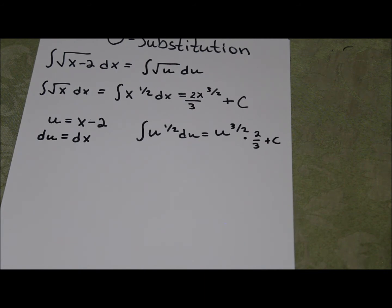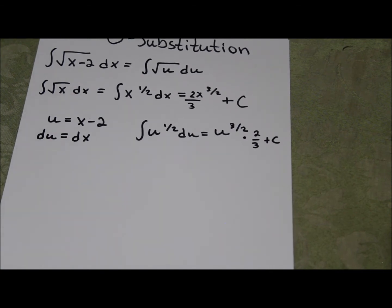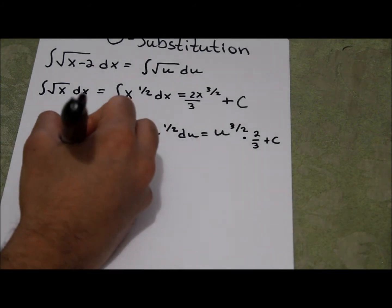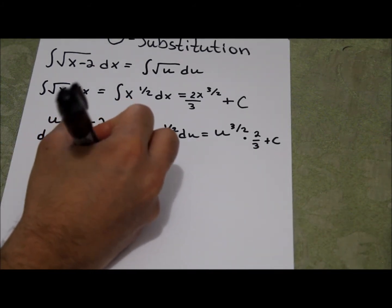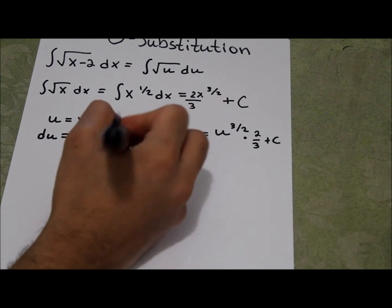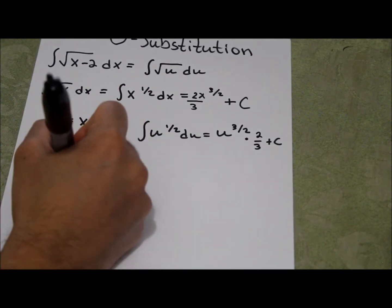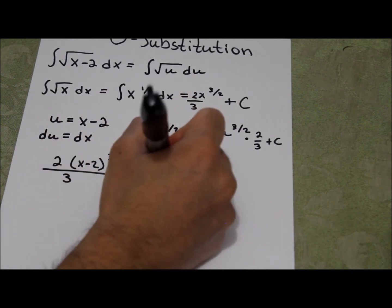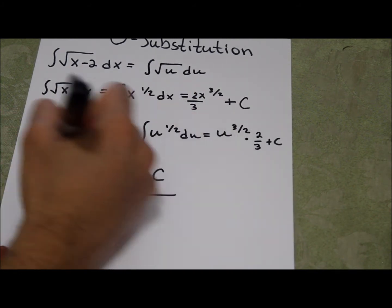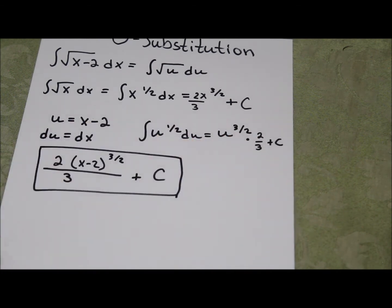But we're not done. Since we did use u-substitution and the original problem was in terms of x, we want to replace the u with x. And what does u equal? u equals x minus 2. So this is x minus 2 to the 3 over 2 times 2 over 3 plus c. And that is the solution for that problem.